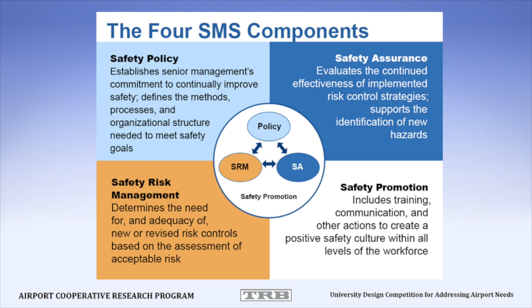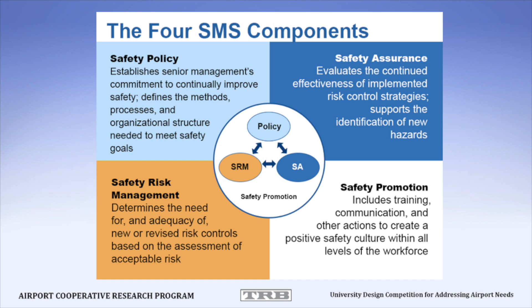Third is safety assurance, which is monitoring the risk to ensure the risk controls are effective, that they are still required, and that they're not causing a new risk or unintended consequence. Imagine putting in cameras to stop drivers from running red lights — data says it's effective, but it also suggests that drivers may be stopping very abruptly, causing more rear-end collisions at the intersection — an unintended consequence. And fourth is safety promotion, which is the process of creating a positive safety culture within an organization, where anyone can report a safety issue without fear of negative treatment or reprisals, and people who make mistakes can report their errors without fear of immediately being disciplined or fired.